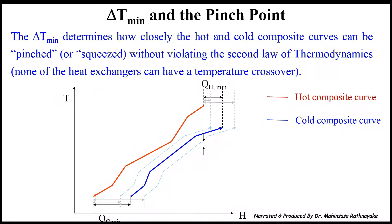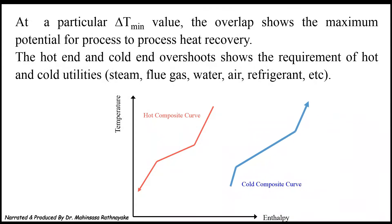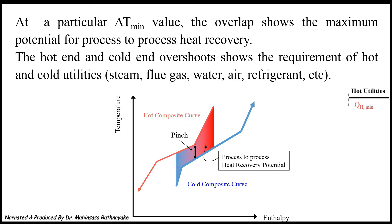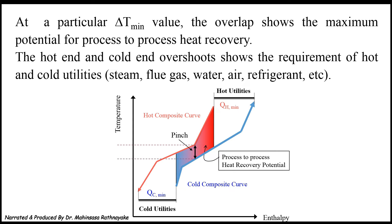Delta T minimum determines how closely the hot and cold composite curves can be pinched or squeezed without violating the second law of thermodynamics, which confirms none of the heat exchangers can have a temperature crossover. At a particular delta T minimum value, the overlap shows the maximum potential for process-to-process heat recovery, while the hot end and cold end overshoots show the requirement of hot and cold utilities. Therefore, from the TH diagram for a system, we can find the minimum hot utility requirement, the minimum cold utility requirement, and the process-to-process heat recovery potential. The rule of thumb in placing the composite curves in the TH diagram is following up the pinch point.